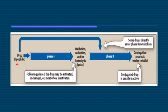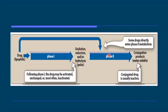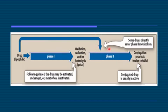A lipophilic drug — we have to make it water soluble; this is the aim of biotransformation. So a lipophilic drug first undergoes phase one reaction, which is oxidation, reduction, and hydrolysis. Following phase one, the drug may be activated, inactivated, or unchanged. Then if it is still not very excretable or ionized, it enters into a phase two reaction, which is a conjugation reaction, and conjugation products are formed which are always water soluble and usually inactive. Some drugs directly enter into the phase two reaction.